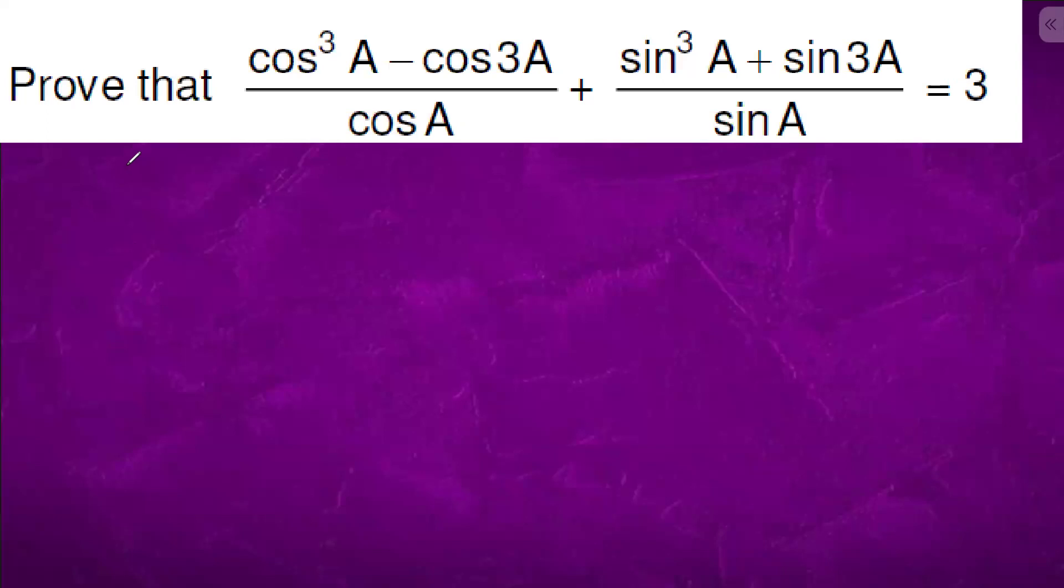First, before doing this question we should know that cos 3θ equals 4 cos³θ minus 3 cos θ, and sin 3A equals 3 sin A minus 4 sin³A.